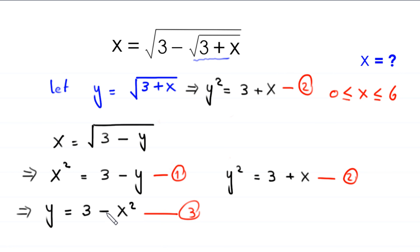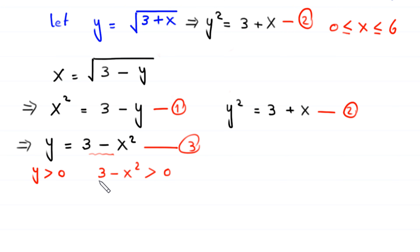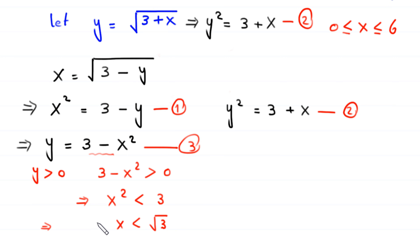Since y is greater than 0, we need 3 minus x squared to be greater than 0. This implies x squared must be less than 3, so x must be less than the square root of 3 and x must be greater than 0. The final domain of the equation is 0 less than x less than the square root of 3.